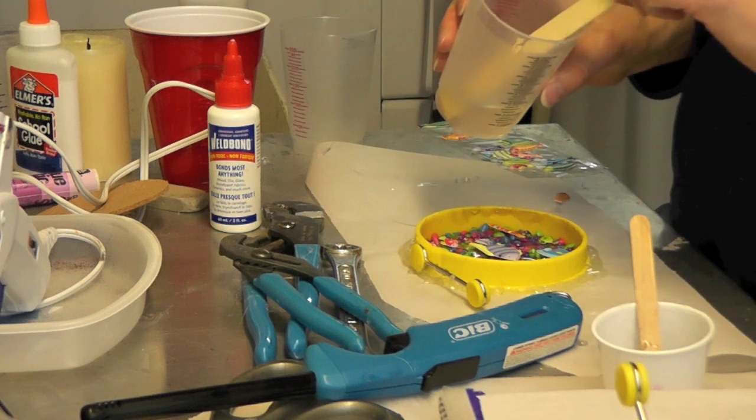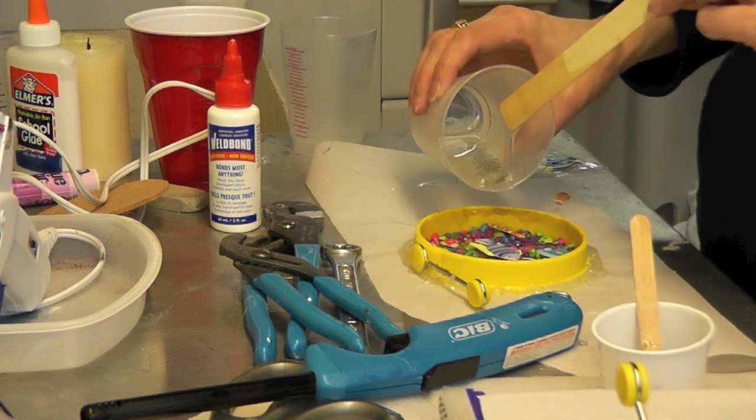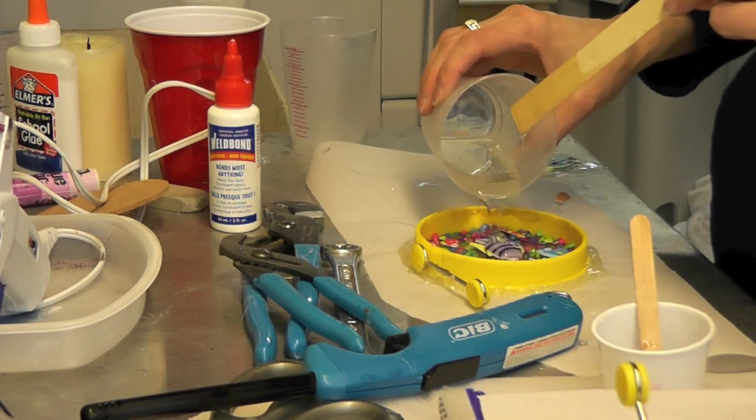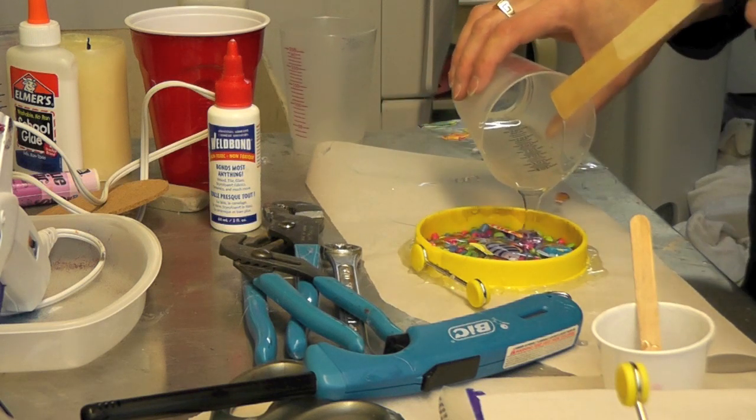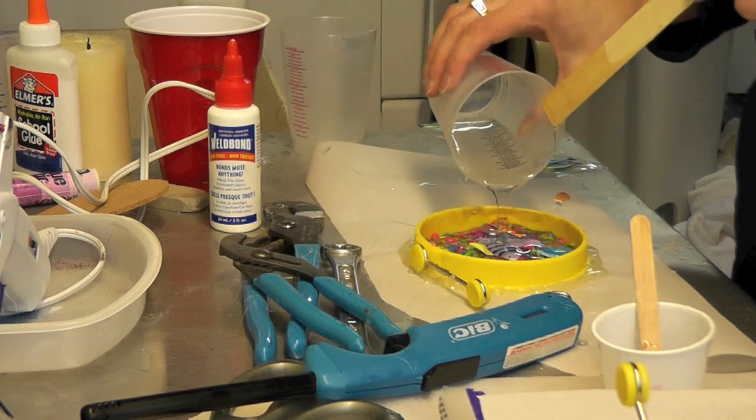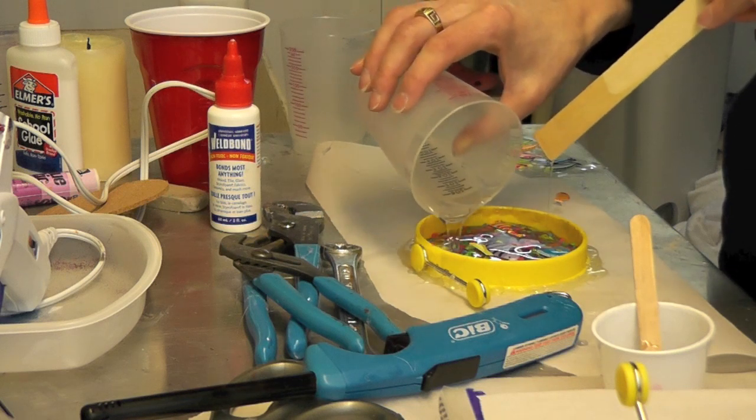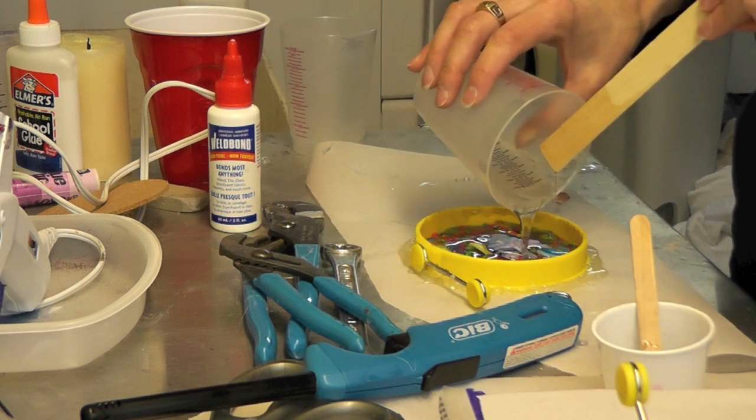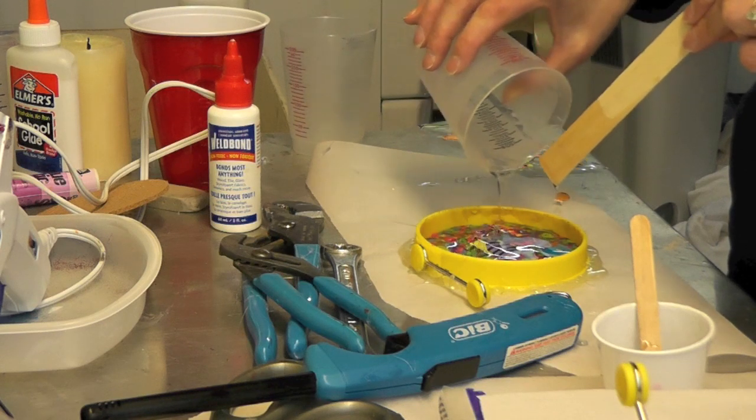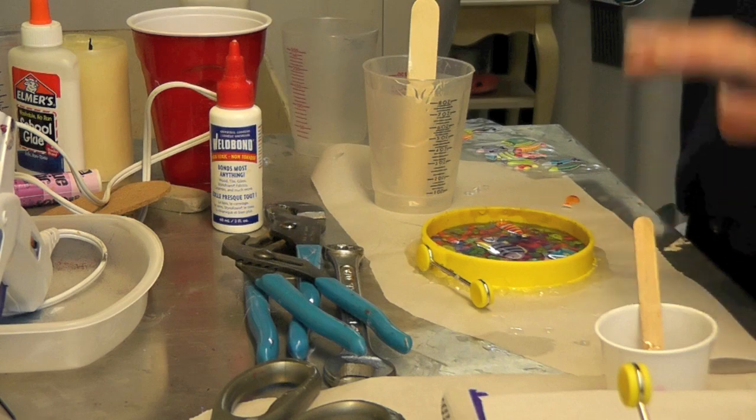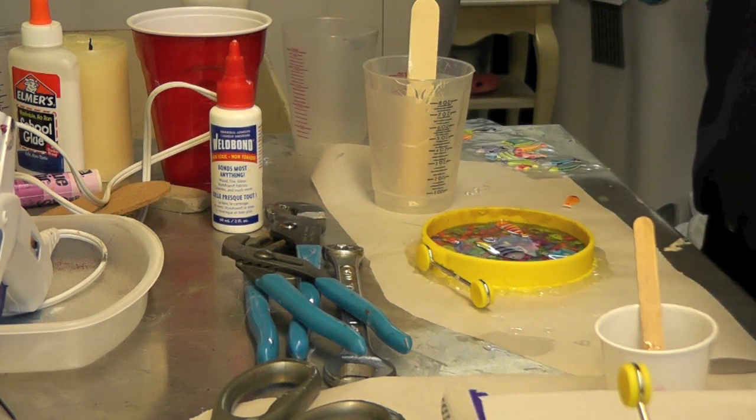So now with the remainder of my resin, I'm going to pour it over the little fishies. Hopefully it will cover everything. If not, it's not that big a deal. I can always mix a little bit more and add it to it if I need. But I think hopefully this will cover everything. And then we'll just leave this to sit for 12 hours and then we'll come back.